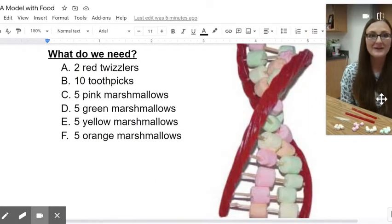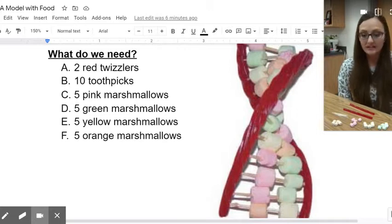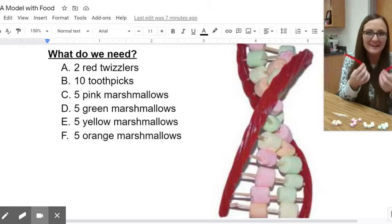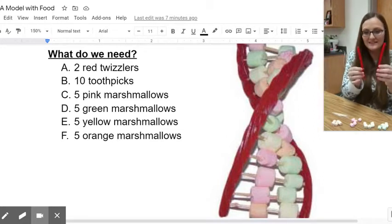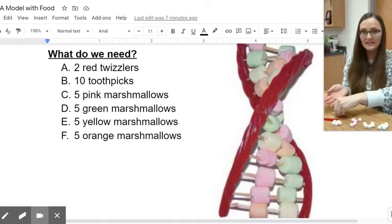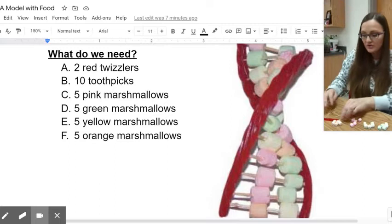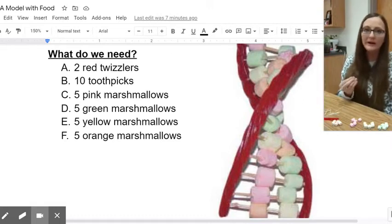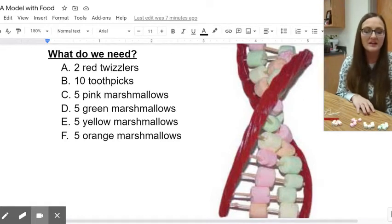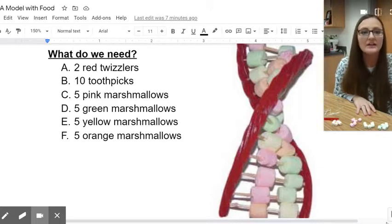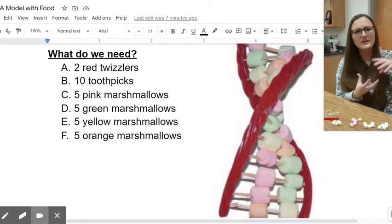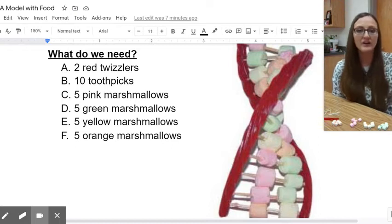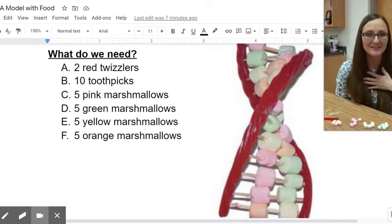What do we need? So what do you need to do this activity? All you need are two Twizzlers. Really, as long as the Twizzlers are the same color, they don't have to be red. It's just really easy to find the red ones. So two Twizzlers, you need about 10 toothpicks. You could certainly use more or you could use less depending on how crowded you want your model to be.